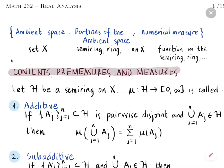We start with a semi-ring H on a set X, then a function mu on this semi-ring. It takes a set in the semi-ring and the value is a non-negative extended real number. We allow the value to be infinity — for example, in the case of the cardinality of an infinite set, the value infinity is permitted.